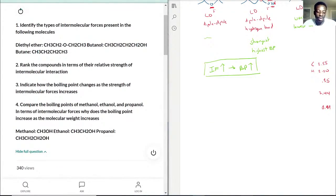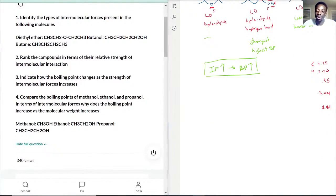They want us to compare the boiling points of methanol, ethanol, and propanol. Methanol looks like this, ethanol looks like that, and propanol looks like that. In terms of intermolecular forces, why does the boiling point increase as the molecular weight increases? This is actually more related to London dispersion. As I said earlier, everything usually has it. They have LD, this has dipole, and this one also has hydrogen bonds. Same with the rest of these.